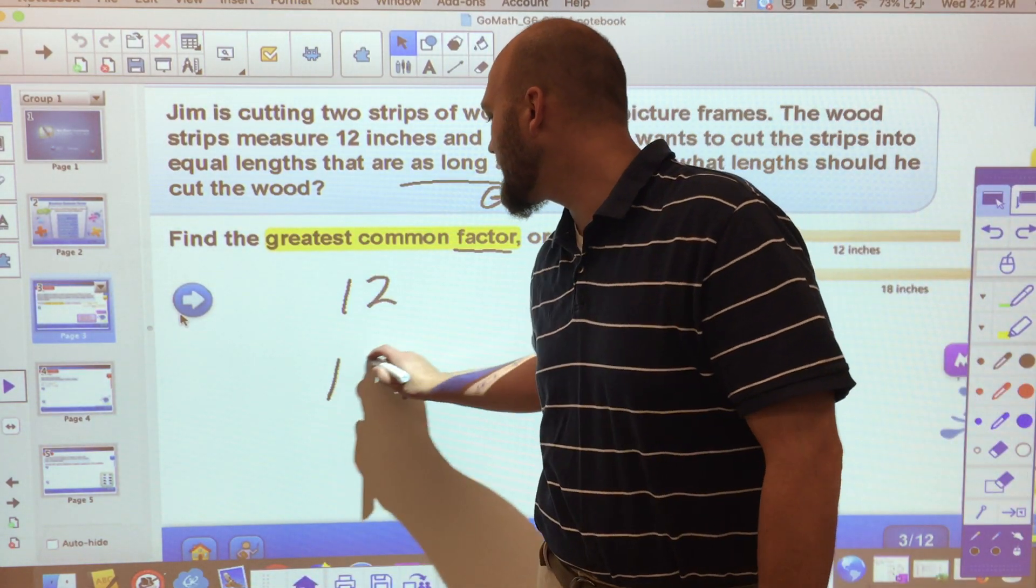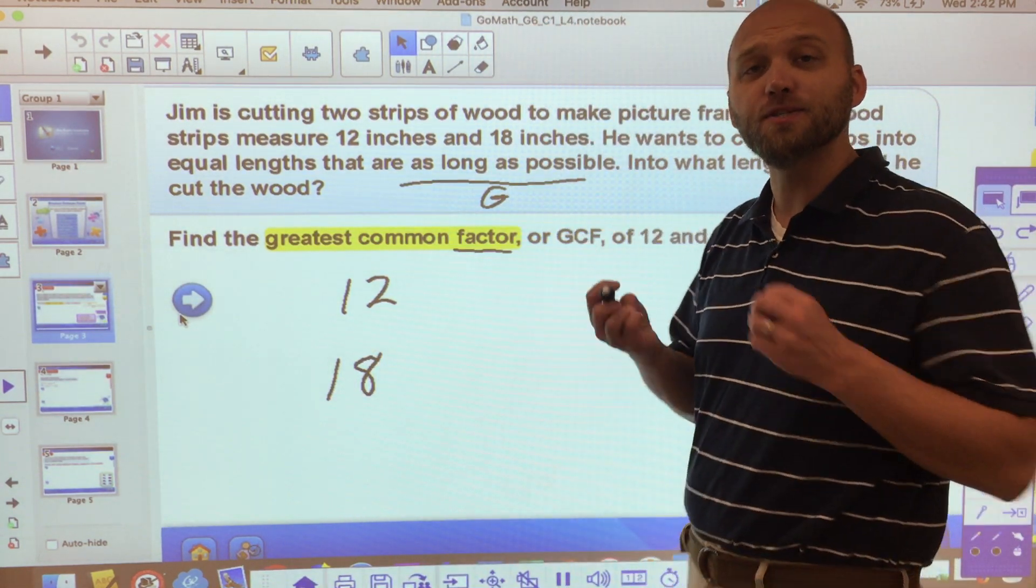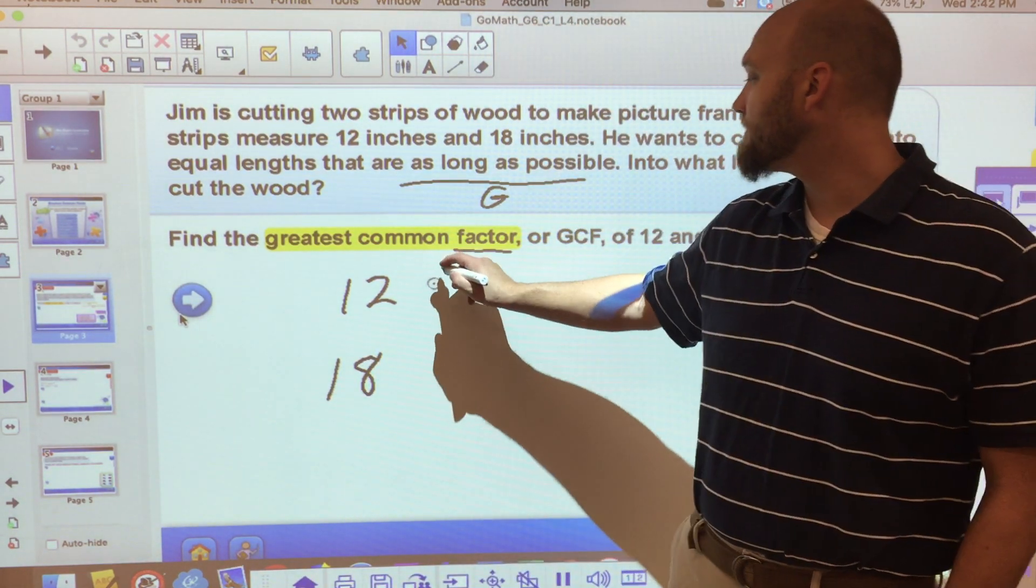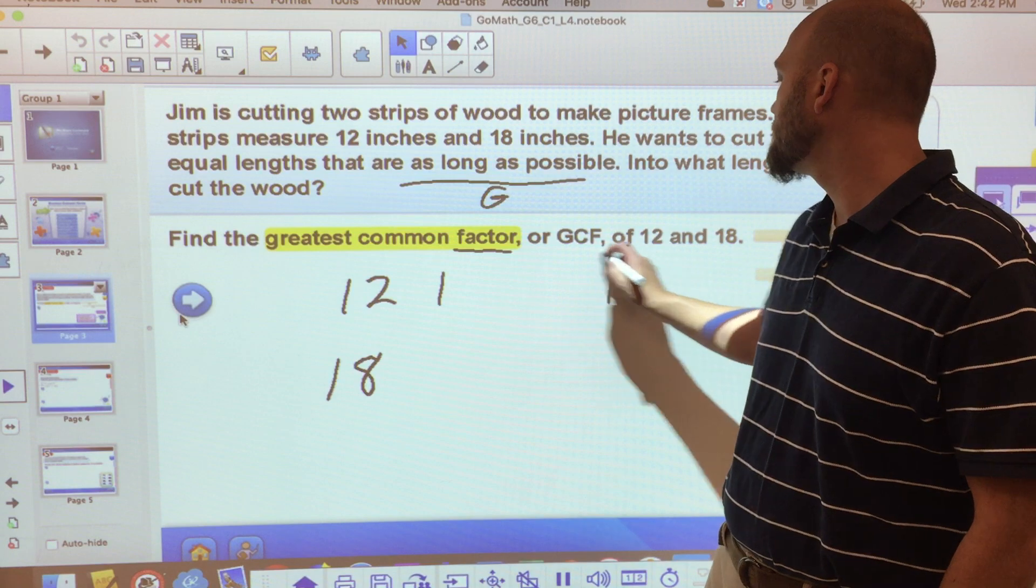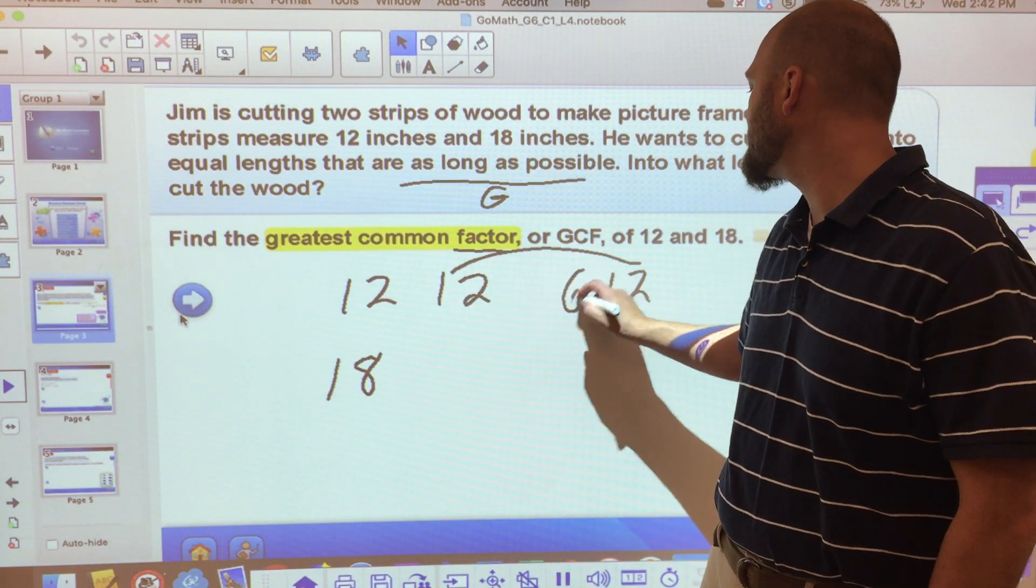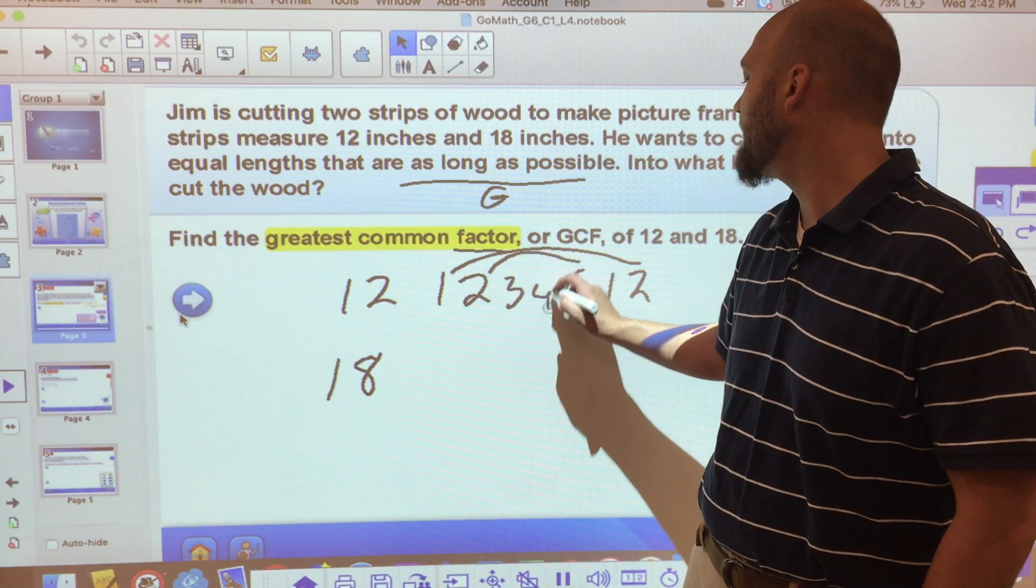Easy enough. I start with 12 and I start with 18 and I'm going to make my factor rainbows. Factors of 12: 1 and 12, 2 and 6, 3 and 4.